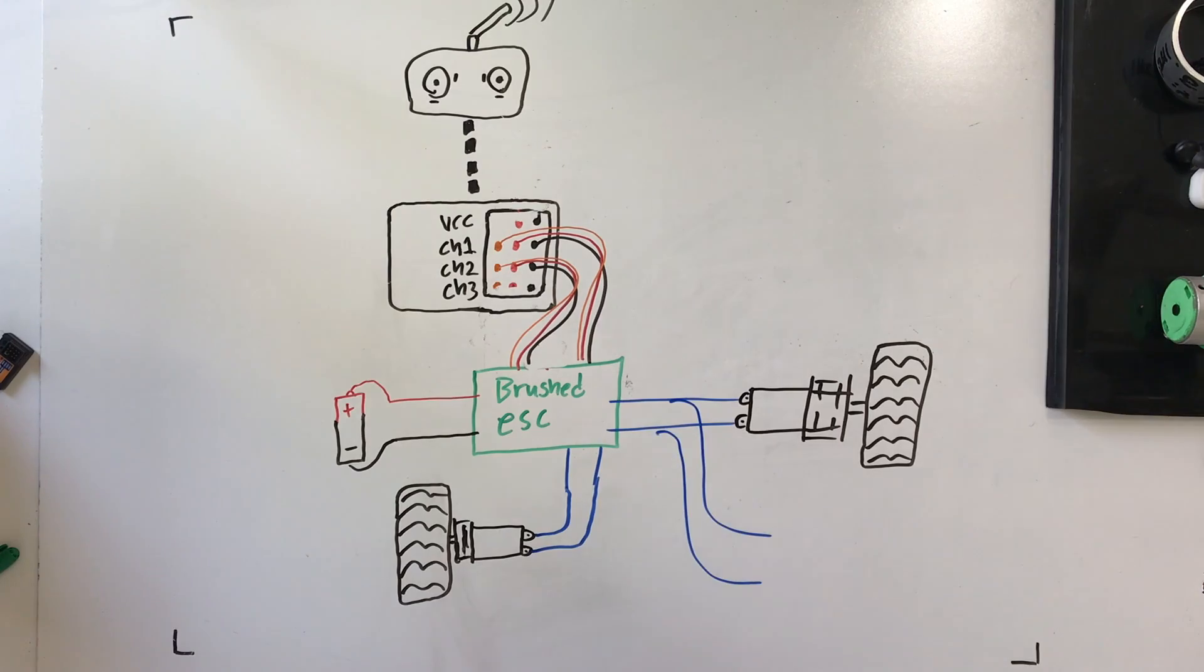Now you can wire two motors to one channel of the brushed ESC. You just need to make sure with speed controllers that you spec the amperage appropriately. So if your motors are capable of drawing one amp, make sure that the speed controller is able to provide that. And if you're going to use a 12 volt battery, make sure that 12 volts is within the input voltage range of the speed controller.